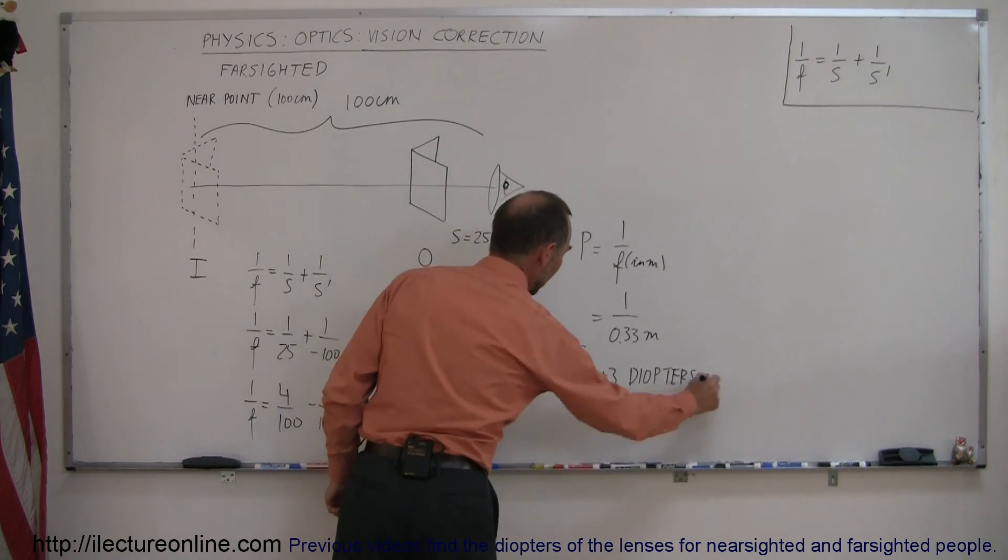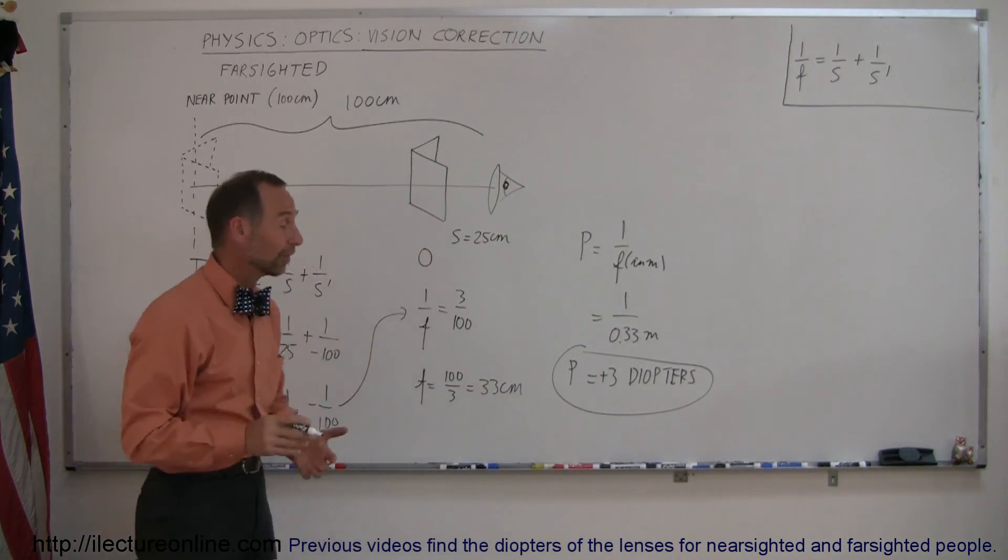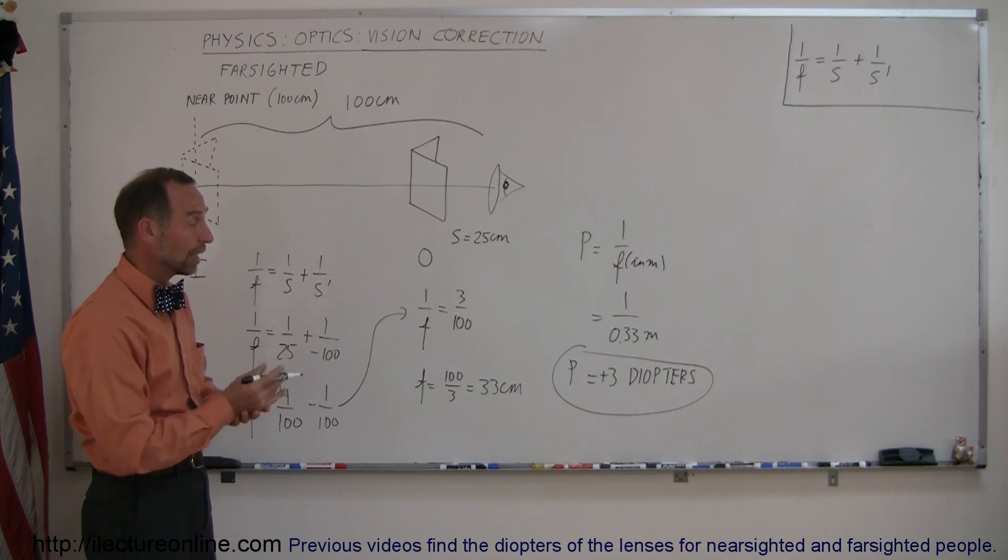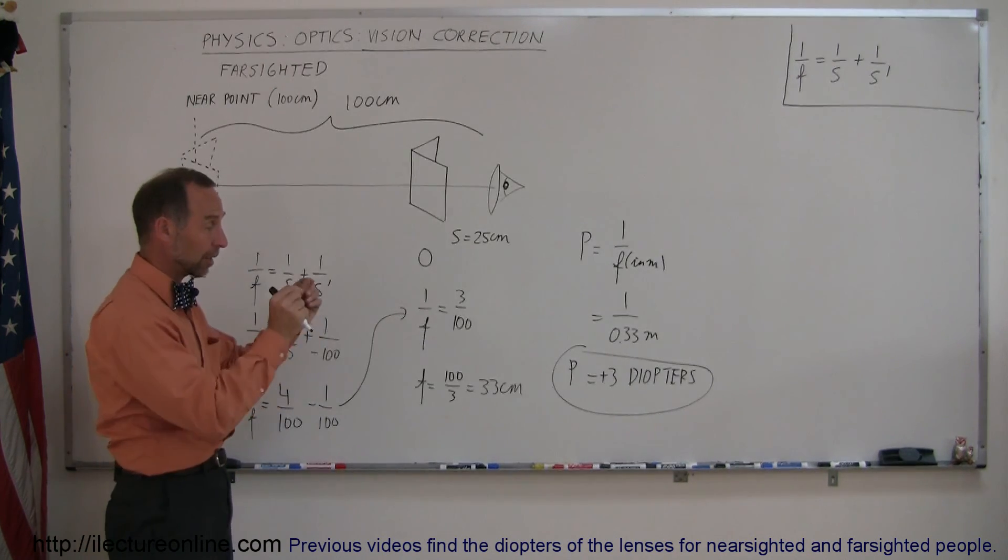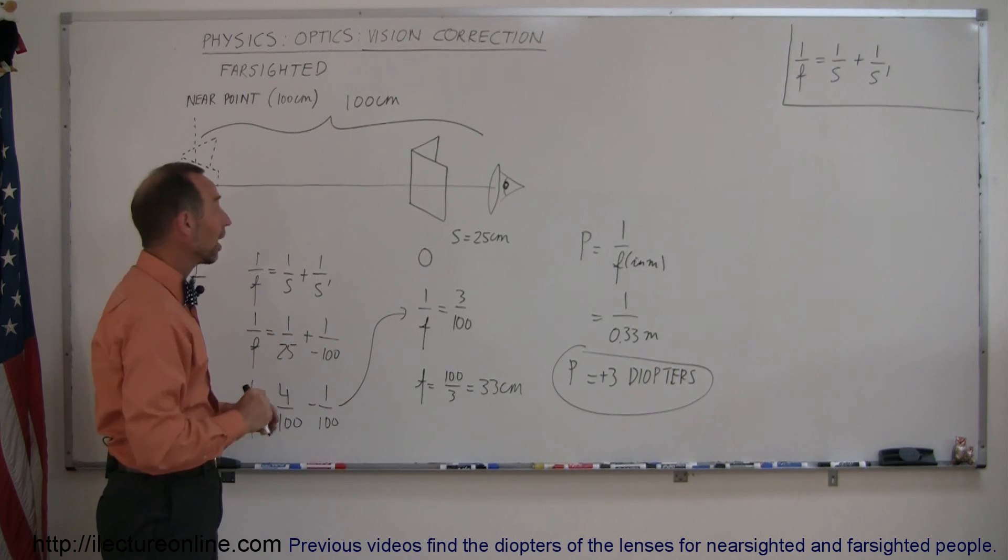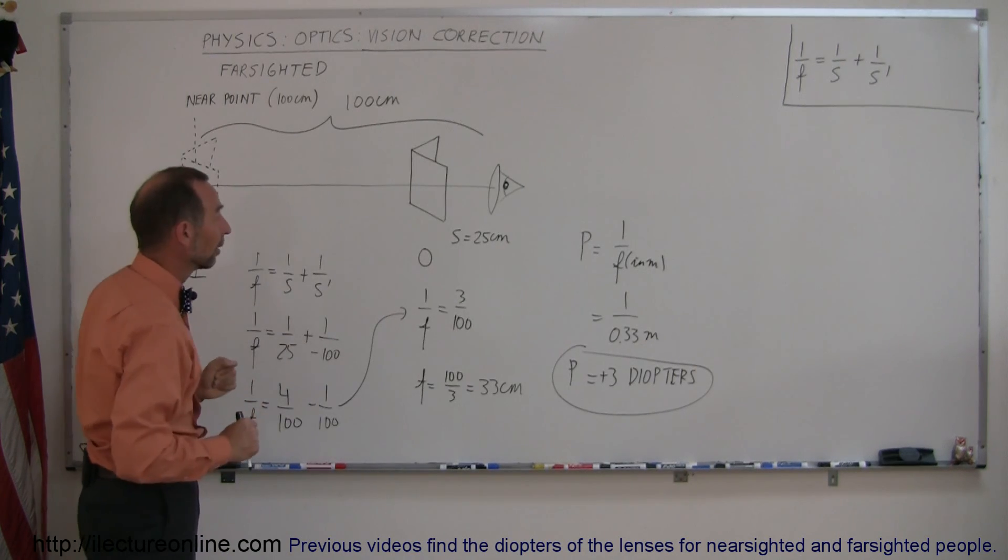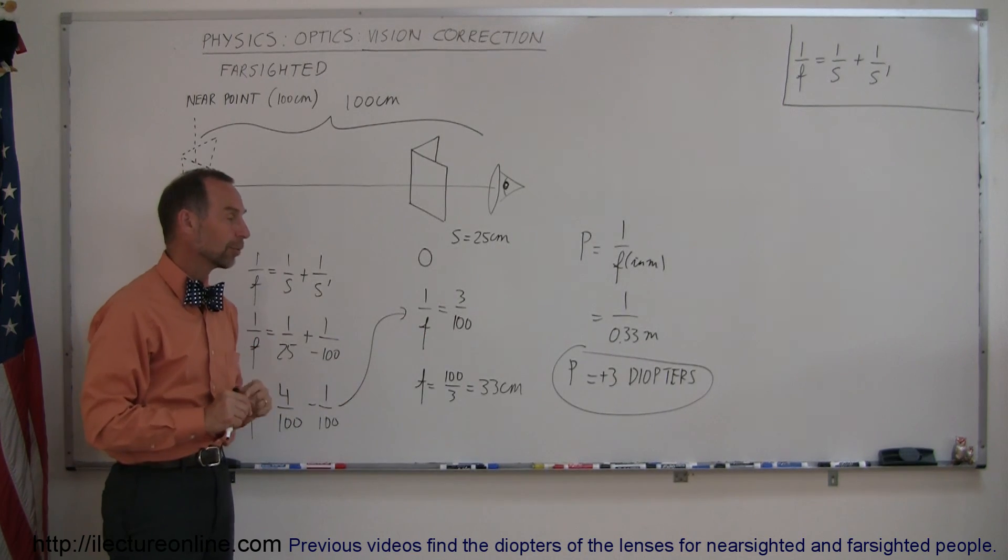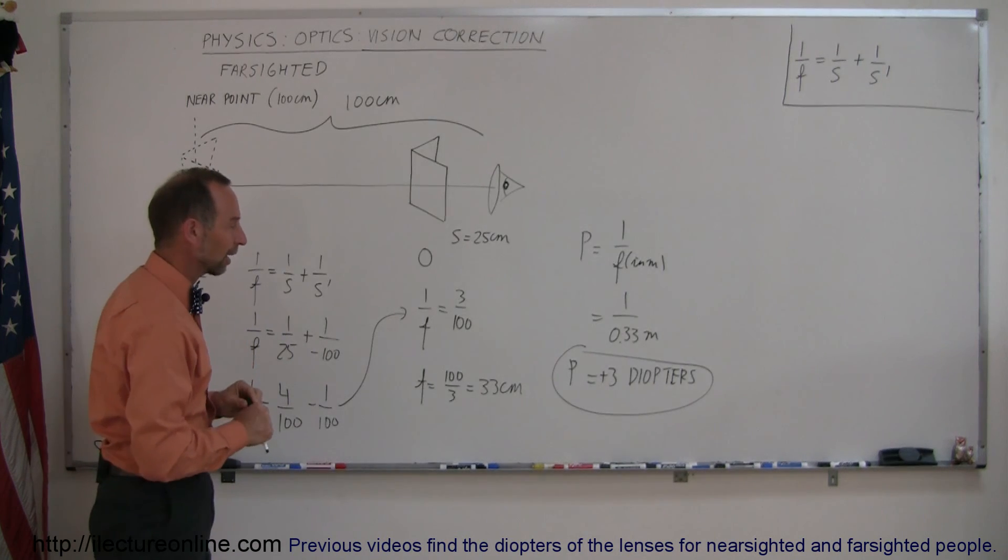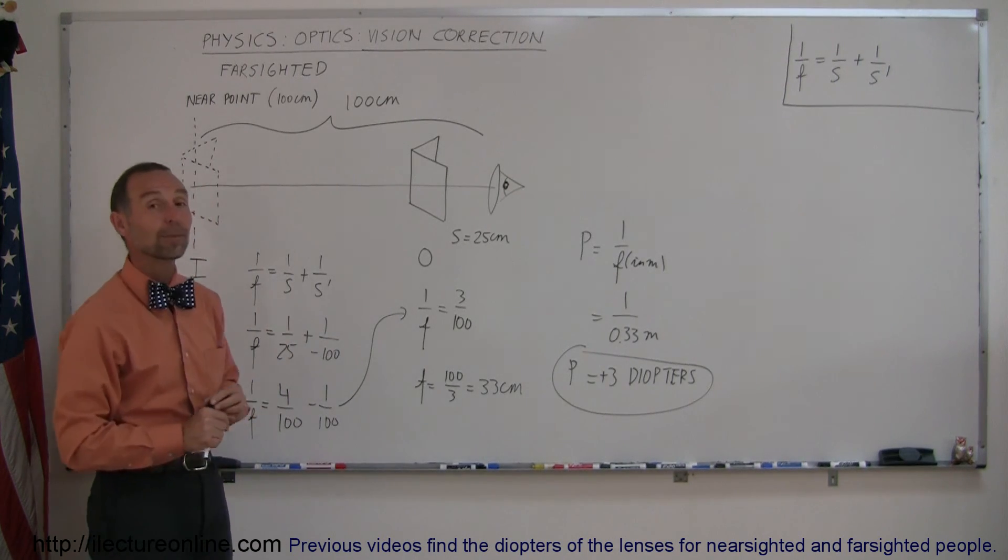There we go. And plus means that it's a positive lens or a converging lens, and so you need to go down to the store and find glasses that are marked plus 3. Put those on. If your near point is 100 centimeters away, you'll be able to read clearly with glasses of that strength. And that's how you do a problem like that.